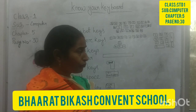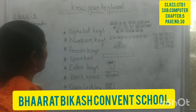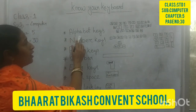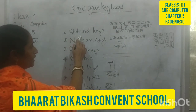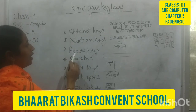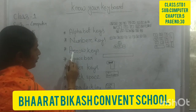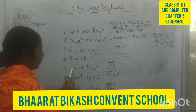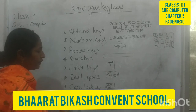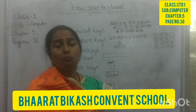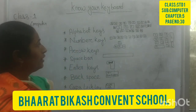So what are the different types of keys on a keyboard? Alphabet key, number key, arrow key, space bar, enter key, backspace, and caps lock. These are the important keys.